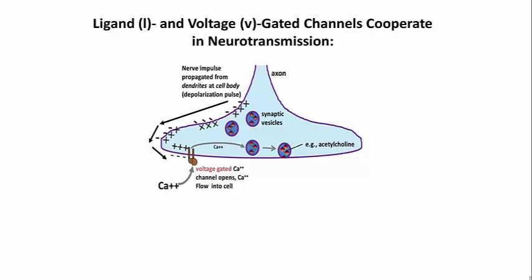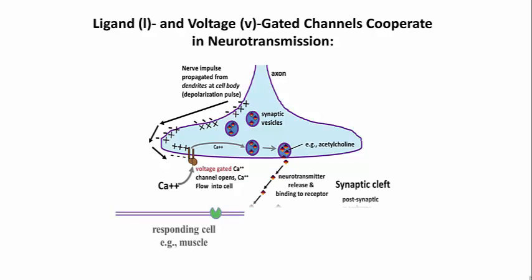The neurotransmitters are released into the synaptic cleft, the space between the nerve ending and the membrane of the responding cell. The neurotransmitters then bind to receptors on the responding cell.